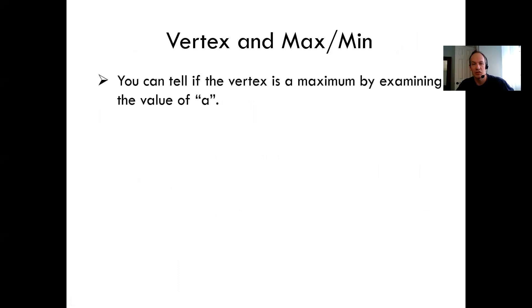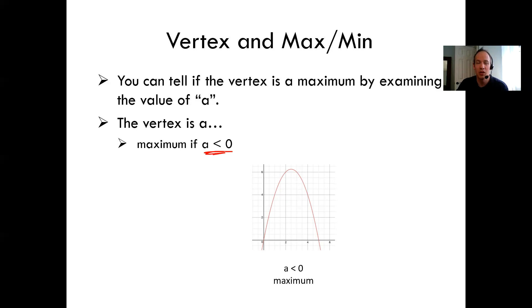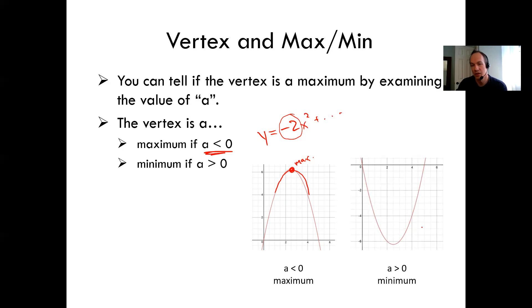Let's look at a reminder of what 'a' means in terms of maximums and minimums. If the vertex is a maximum, it's a maximum when a is less than zero — so if we write y equals negative 2x squared plus something, a is less than zero, the parabola opens downward, giving a maximum. If a is greater than zero, that gives a minimum — the parabola opens upward, like y equals positive 3x squared plus something.